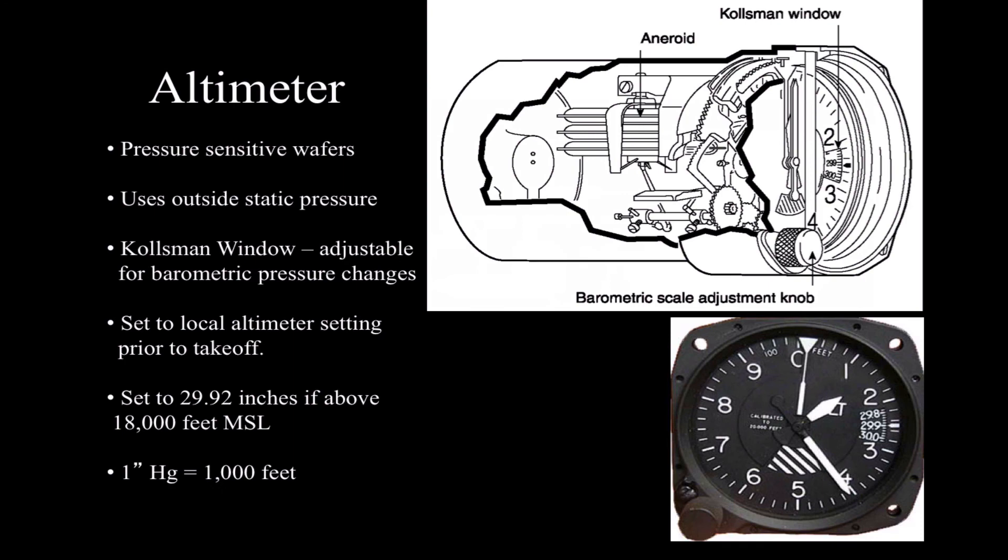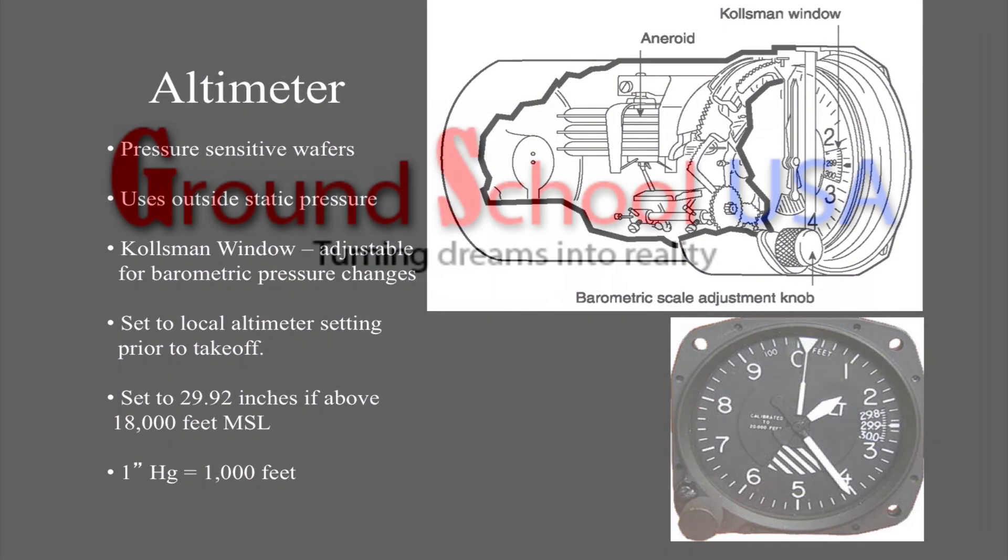But next let's go to the altimeter. Altimeter is a little more simple instrument than the airspeed in the sense that it only uses outside static pressure only. There's no ram air pressure. The pitot tube does nothing for the altimeter. All we need to know is as we go up the pressure goes down and vice versa. So the altimeter is going to think that way. The altimeter really has no idea about your altitude. It just knows pressure and it equates certain pressure changes to certain altitude changes.